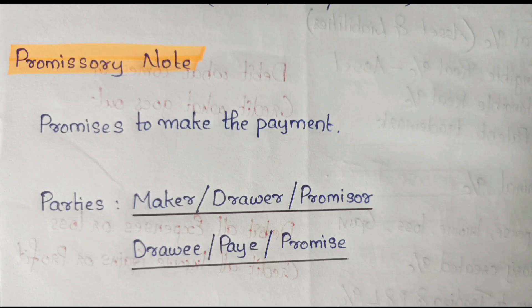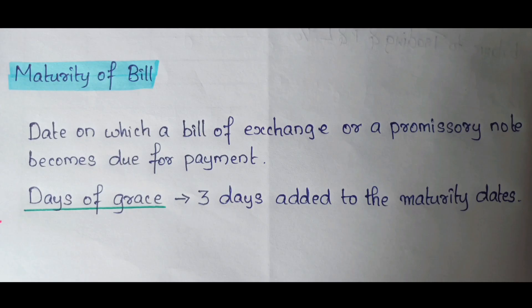Second, promissory note — a promise to make payment with two parties: maker and payee. Third, maturity of bill — the bill due date. The key term here is Days of Grace, which gives three additional days to the maturity date.